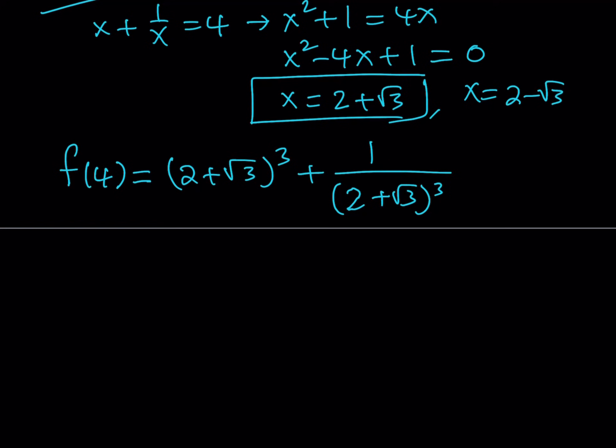So to save you the trouble, it's easy - you can do it with the binomial theorem or with a calculator or whatever. But if you cube 2 plus root 3, you're going to be getting 26 plus 15 root 3. So now if I plug in this number into my equation here, f of 4 is going to equal 26 plus 15 root 3 plus 1 over that.